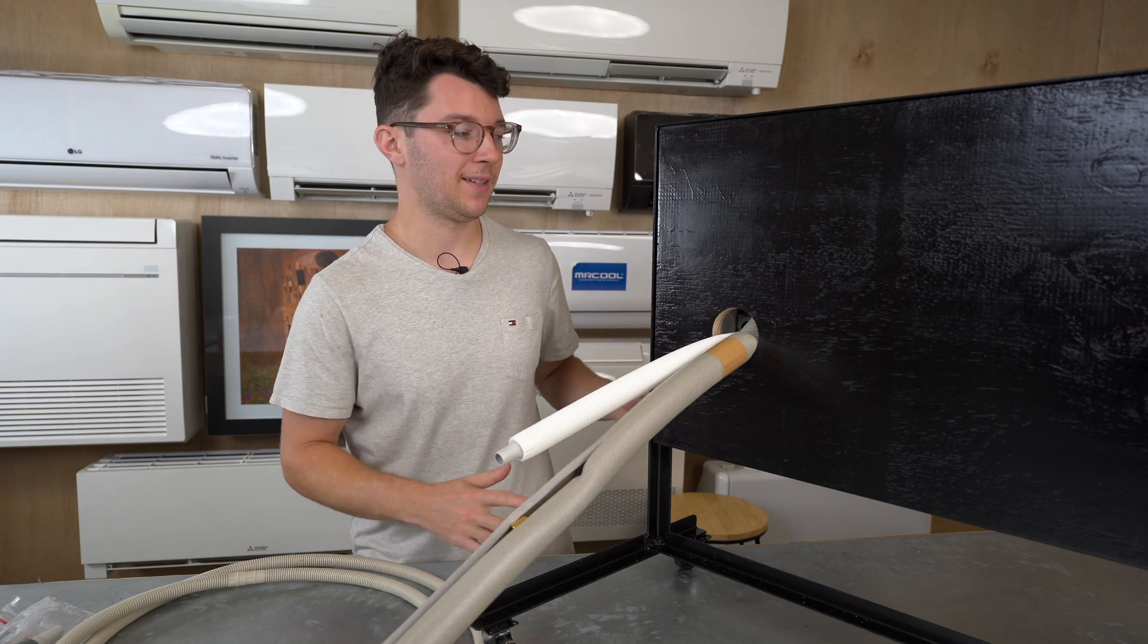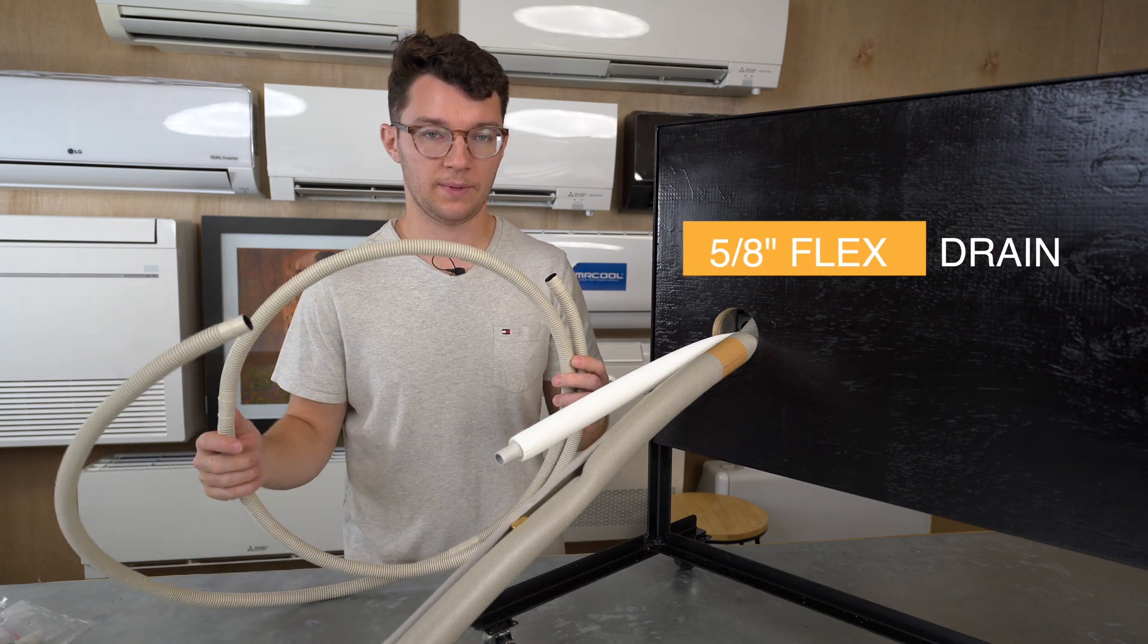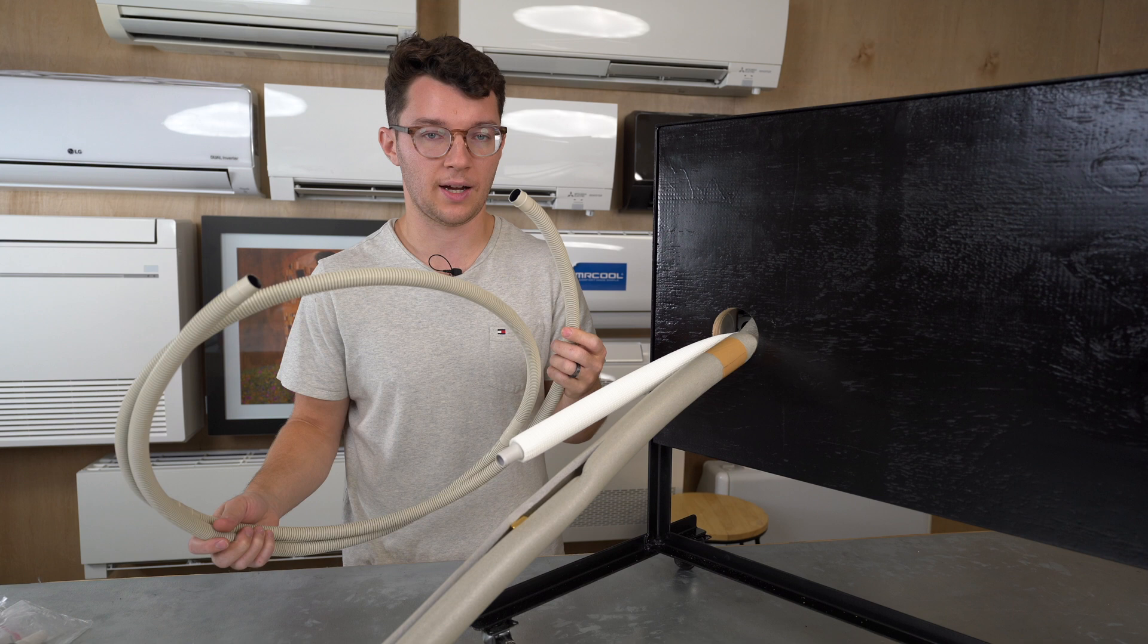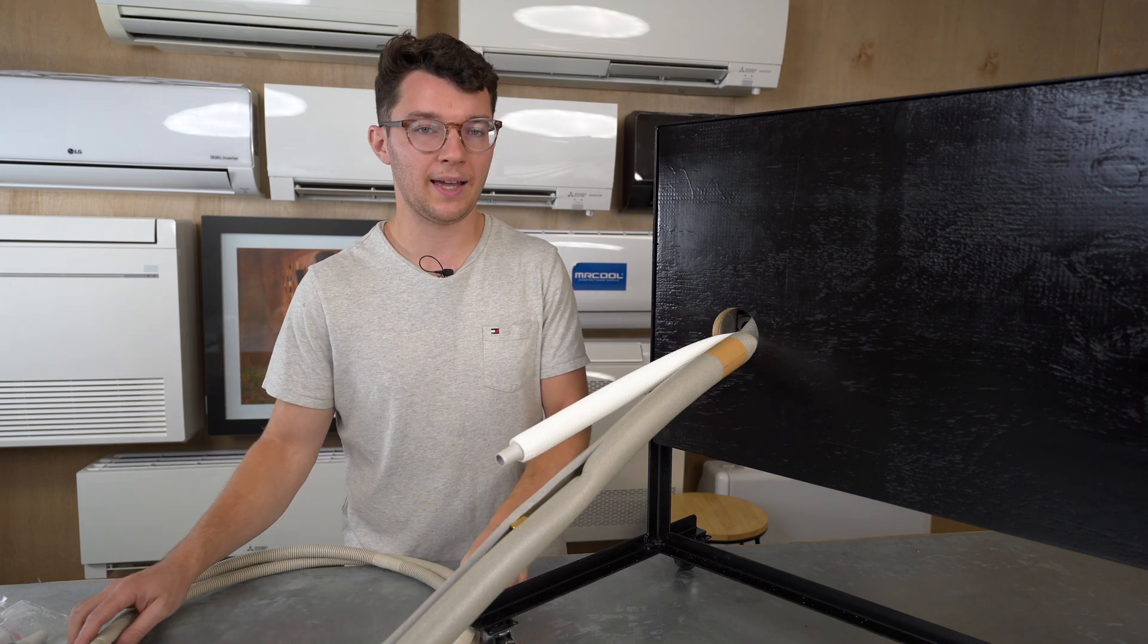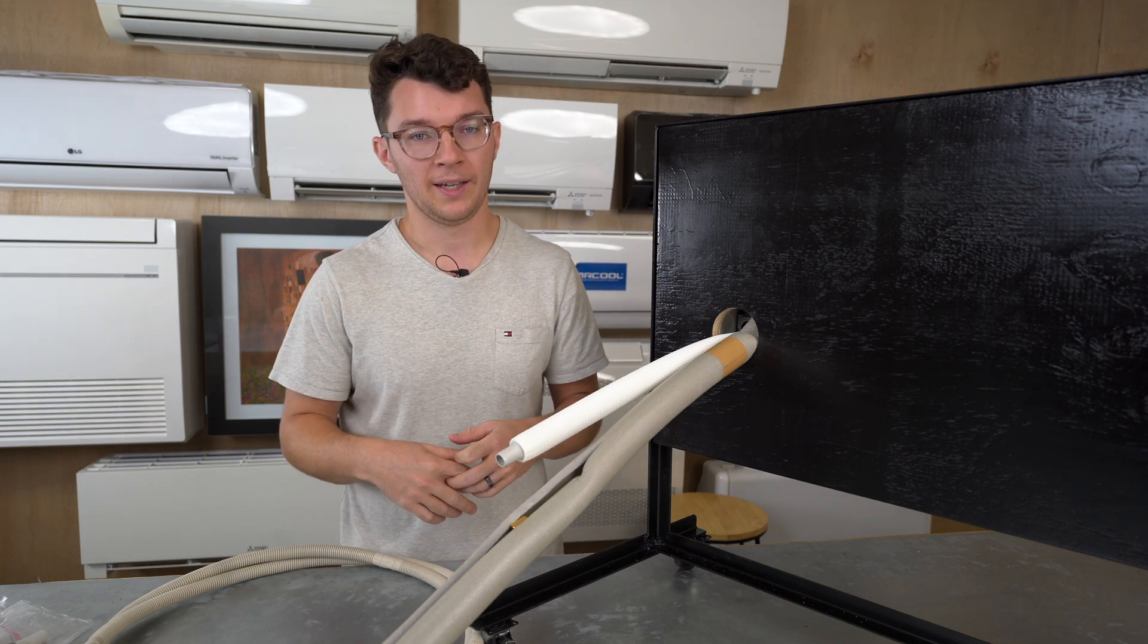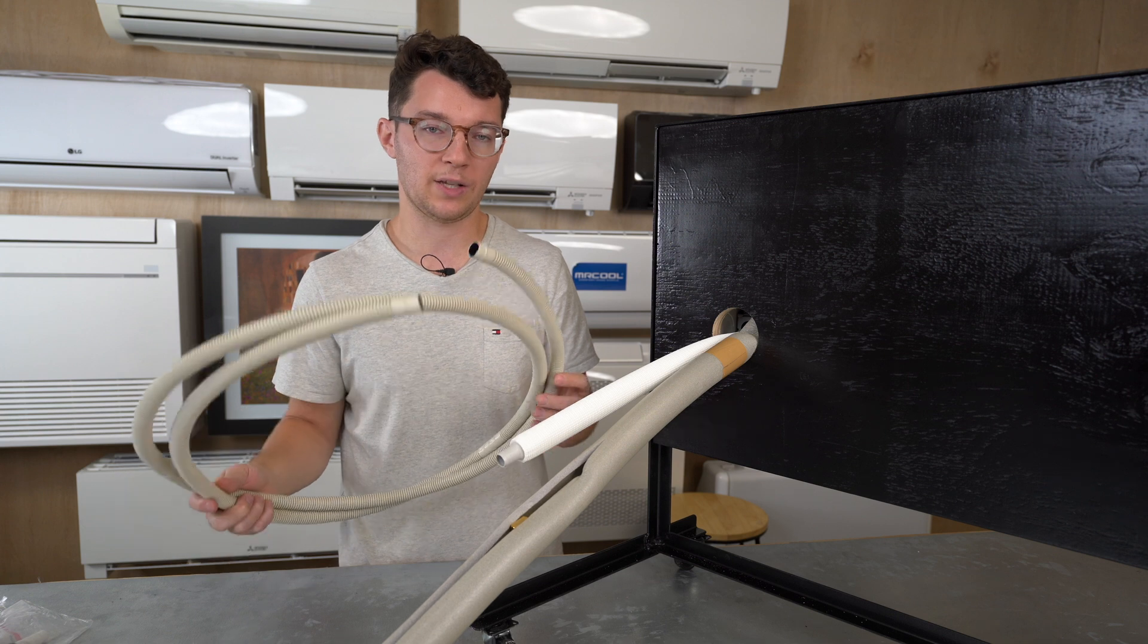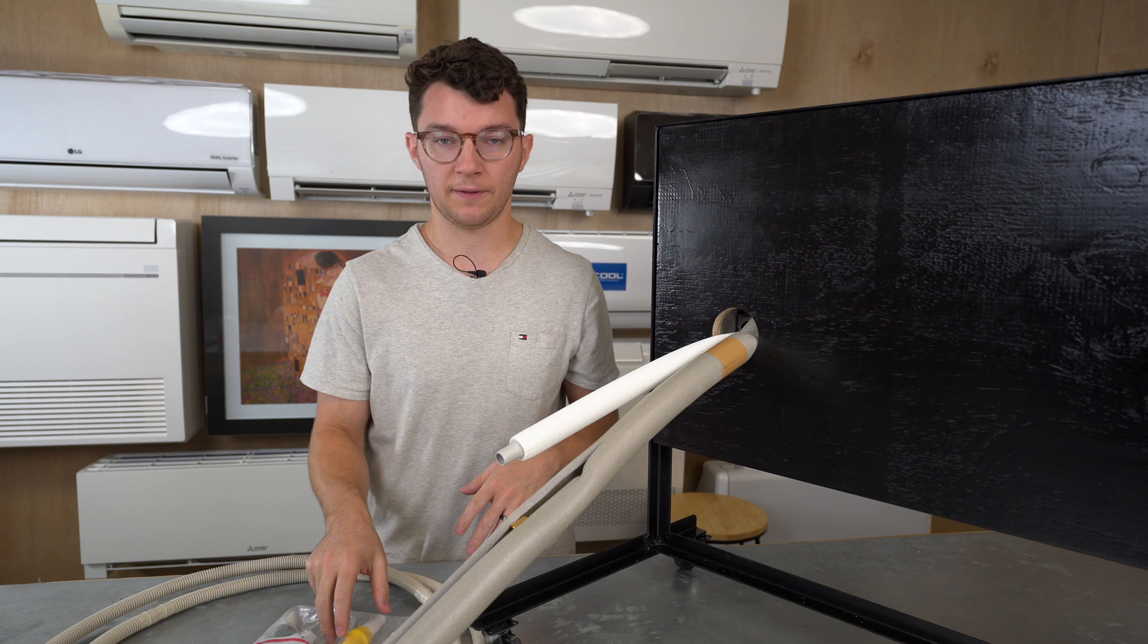For the majority of ductless mini split installations, this is going to be your typical setup. Most of the time you're going to be using what's called flex drain, a corrugated 5/8 flex drain. It's super popular. We at Gotzeckless prefer using corrugated rather than clear tubing because clear tubing tends to shrink, and when it shrinks over time it can cause clogs. This corrugated is affordable and it doesn't have that effect.